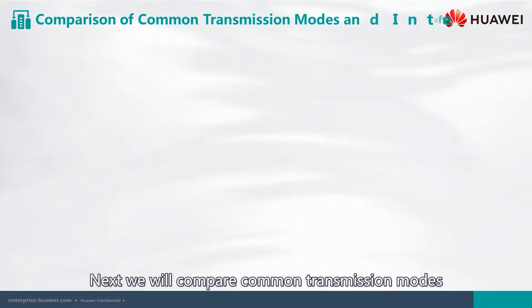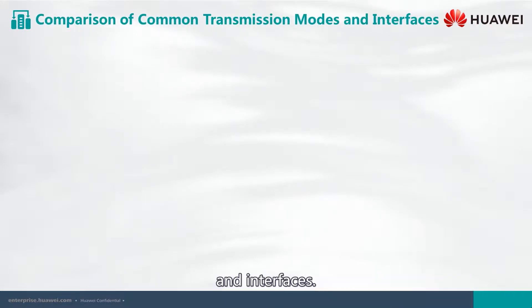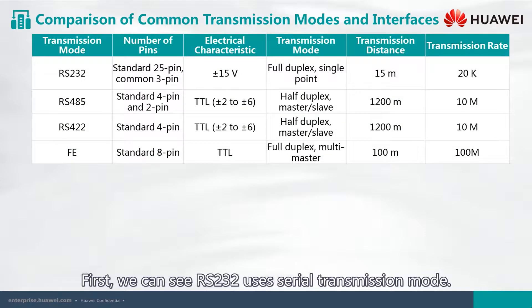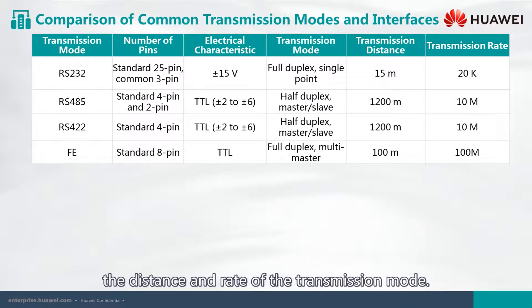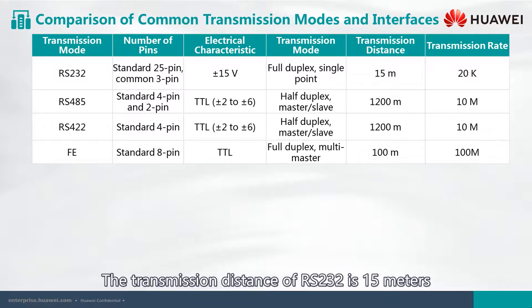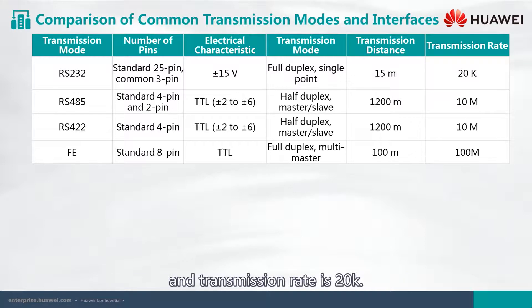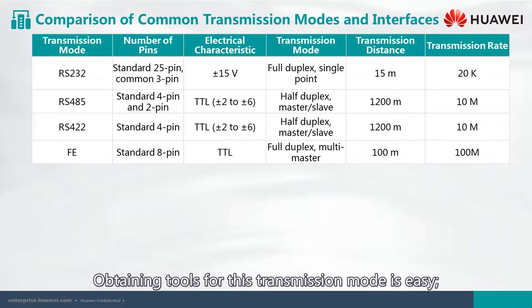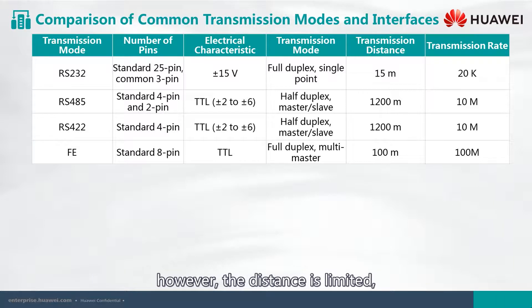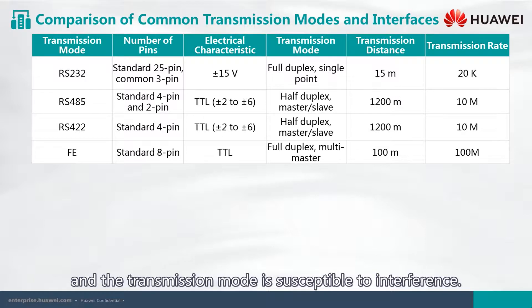Next, we will compare common transmission modes and interfaces. RS-232 uses serial transmission mode. We mainly focus on the distance and rate of the transmission mode. The transmission distance of RS-232 is 15 meters, and transmission rate is 20k. Obtaining tools for this transmission mode is easy. However, the distance is limited, networking is unavailable, and the transmission mode is susceptible to interference.